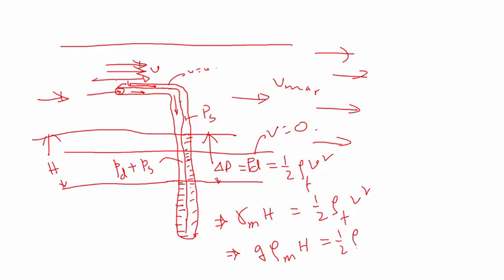Height of the manometer fluid, rho of the manometer fluid. So then V is equal to square root of 2 rho of manometer fluid times g H divided by the rho of the fluid.